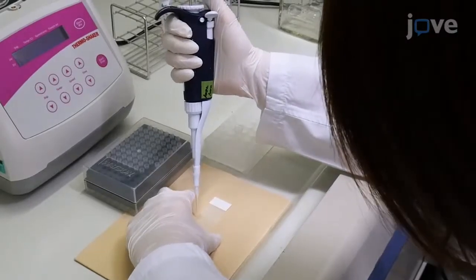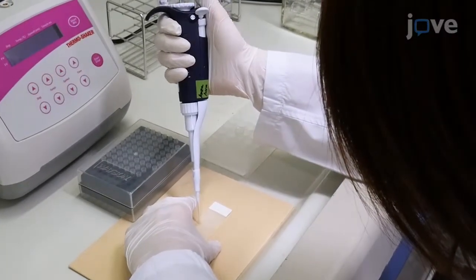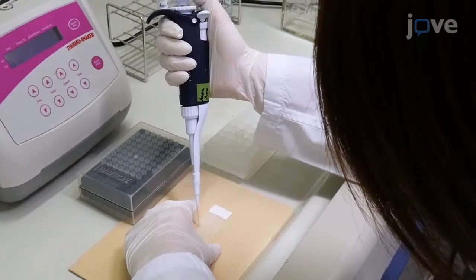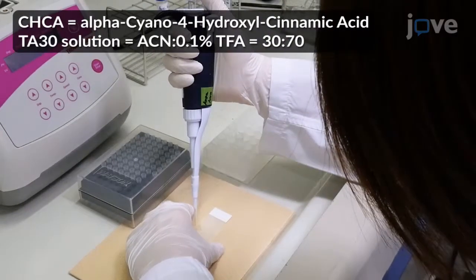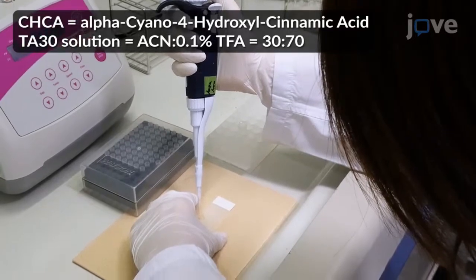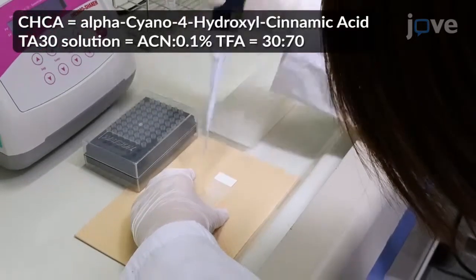To make the calibration standard, dissolve the peptide calibration standard and the protein calibration standard in a 1 to 4 ratio with CHCA in TA30 solution and then dilute it 10 times. Place 1 microliter of calibration standard on the slide at 4 different locations.